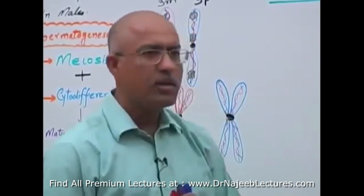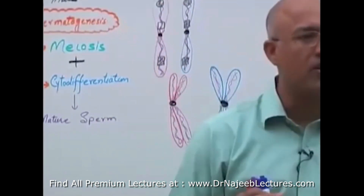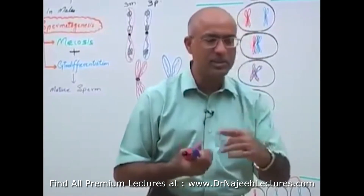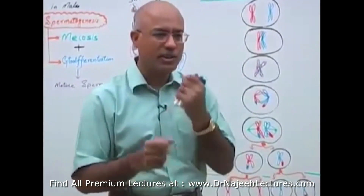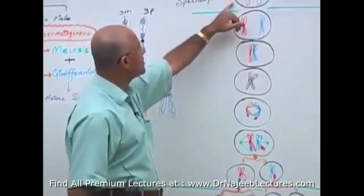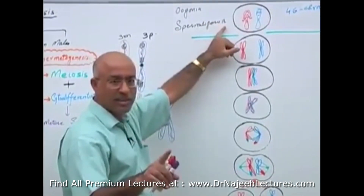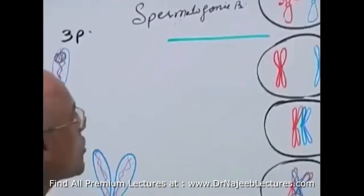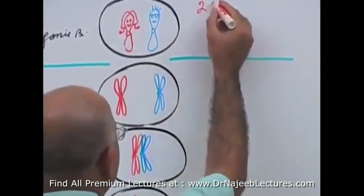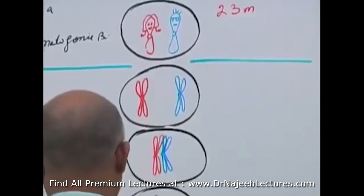Let's suppose that in my body spermatogenesis is going on. If spermatogenesis is going on, my germ cells must be undergoing meiotic division — a specialized type of division which occurs specifically during formation of germ cells. This primary cell is in my testes. Spermatogonia B has 23 maternal chromosomes plus 23 paternal chromosomes.